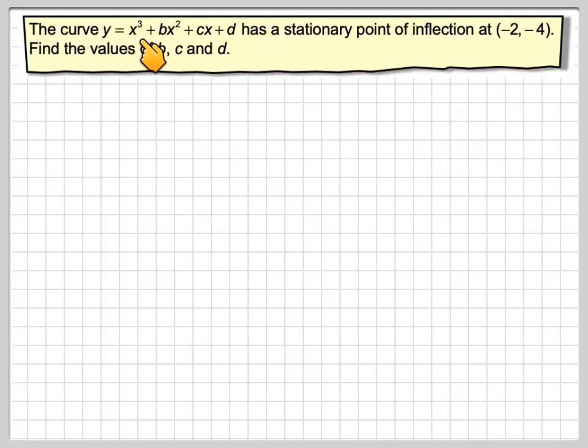The curve y equals x cubed plus bx squared plus cx plus d has a stationary point of inflection at minus 2, minus 4. Find the values of b, c, and d.